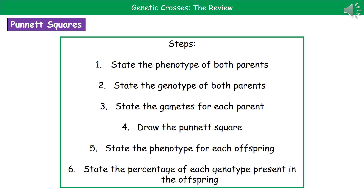Now let's look at the steps needed to work out a genetic cross using a Punnett square. First, state the phenotype of each parent. Then state the genotype. Write the gametes each parent has — they split off. Draw the Punnett square, state the phenotype for each offspring, and finally state the percentage or ratio of each genotype present in the offspring.